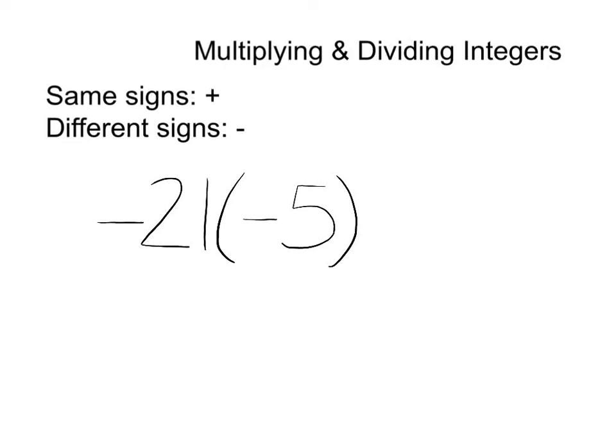Negative 21 times negative 5. The way we know that this is multiplication is because the 21 is right next to the parentheses with nothing in between. So whenever you have a parentheses right next to something with nothing in between, it's multiplication.